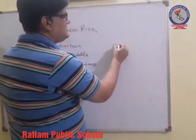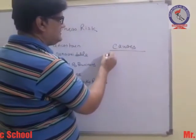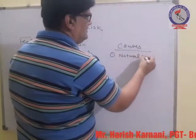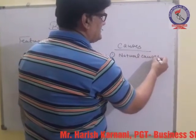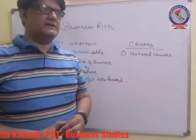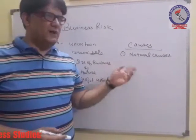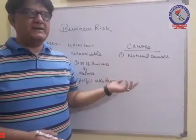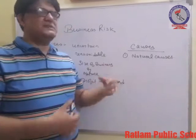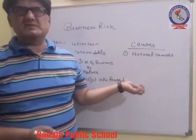Now we move to the causes of business risk. The first cause is natural causes. Business risk arises due to natural causes which are not in the control of the business, such as natural disasters like flood, earthquake, famine, etc. All things that are natural and cannot be controlled by the businessman can result in heavy losses.